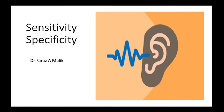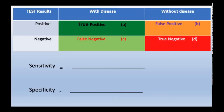Bismillahirrahmanirrahim. I welcome you all in this video. Today we are going to learn about sensitivity and specificity calculation. The sensitivity of a test, as its name indicates, is the ability of a test to identify positive or diseased individuals. Specificity means the percentage value that the test has to identify negative or non-diseased individuals in a cohort.